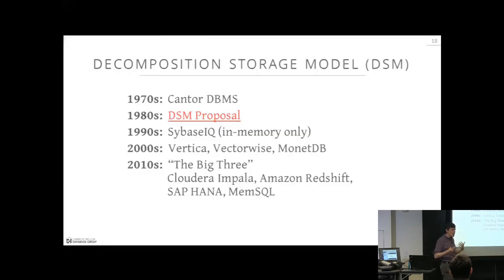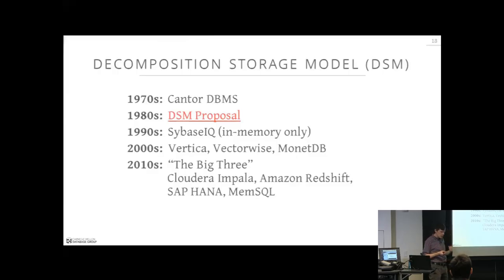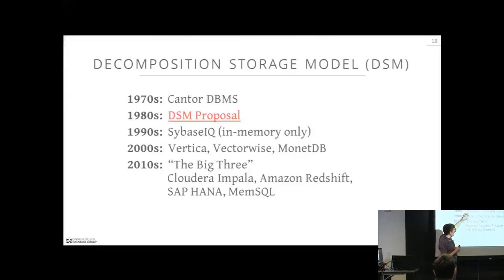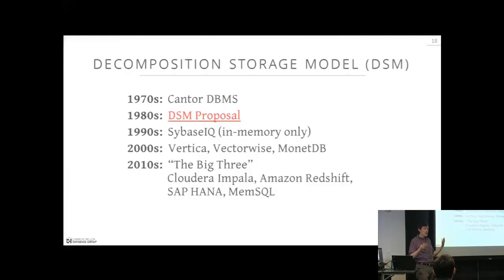In the 2000s, column stores became really prominent. Vertica was the commercialized version of C-Store from Stonebraker at MIT and Brown. VectorWise was an optimized version of MonetDB — MonetDB used mmap and a materialization iteration model, while VectorWise switched to vectorized execution and a more refined buffer pool manager. These systems demonstrated clear performance boosts. Vertica was bought by HP; VectorWise was bought by Actian (the successor to Ingress), and now selecting a column store in Ingress gives you VectorWise.